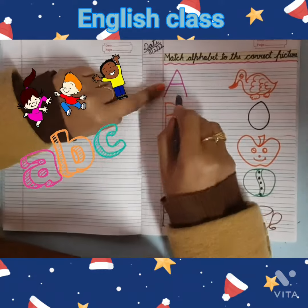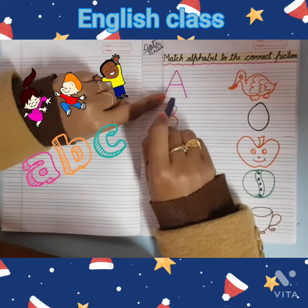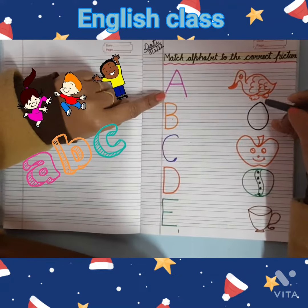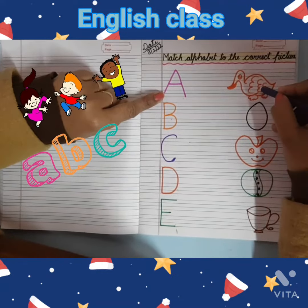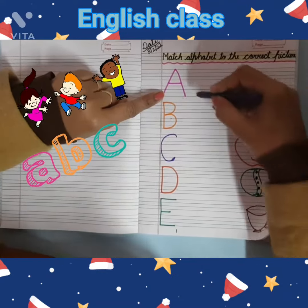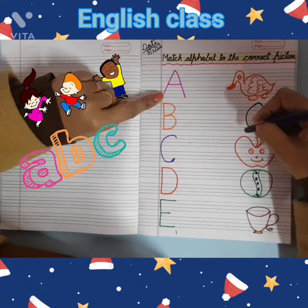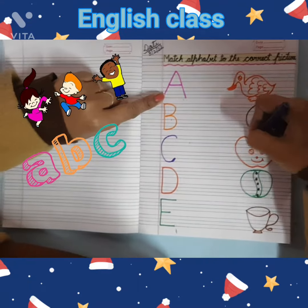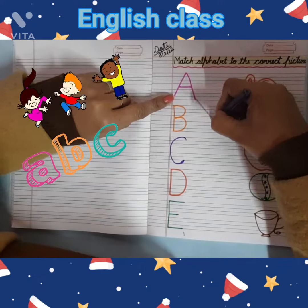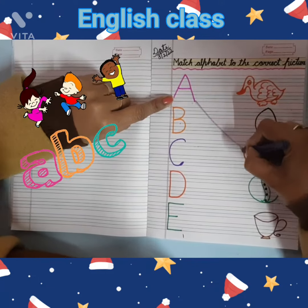Which alphabet is this? A. A for apple. Look, where is apple? This is apple. We are matching apple with A. Yes, slowly, slowly.